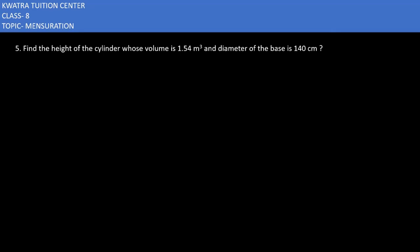Let's start with question number 5. It says find the height of the cylinder whose volume is 1.54 meter cube and diameter of the base is 140 centimeters. You have to convert the values because the volume is in meter cube and your diameter is given in centimeters. Make sure you convert into meters, so the diameter is 1.4 meters. The radius is 1.4 divided by 2, which gives you 0.7 meters.